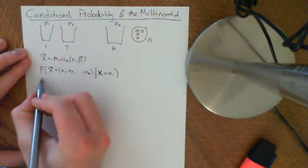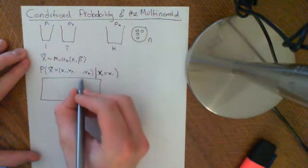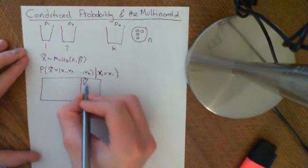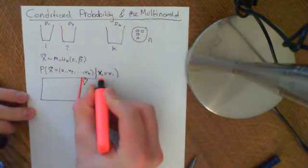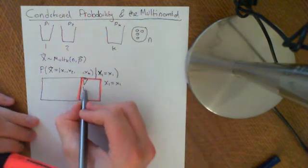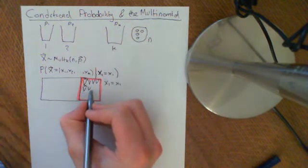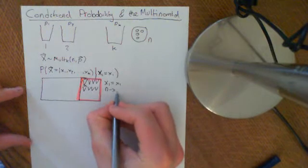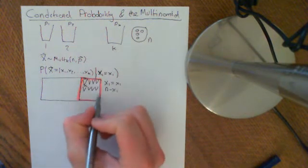Remember what this means: if we have the whole probability space, which is every possible outcome of this experiment, we're taking a subset of that — the subset where the first basket has got x1 balls in it. So every single outcome in this subset is the event that X1 equals little x1. All the outcomes in here have a common feature: in the first basket there are x1 tennis balls, but in the other baskets the way you share out the n minus x1 balls varies.